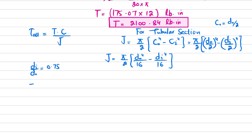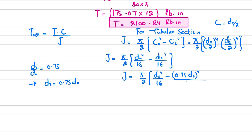Since di over d-naught equals 0.75, we substitute di equals 0.75·d-naught into the expression for J. So J becomes π/2 times (d-naught^4/16 minus (0.75·d-naught)^4/16). Solving this gives J equals 0.0671·d-naught^4.